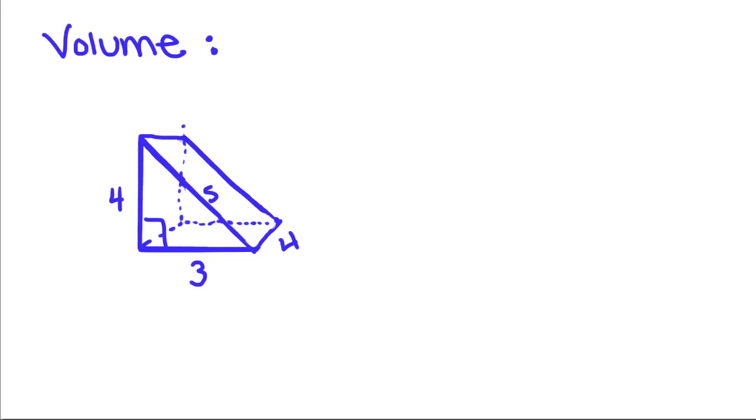We're going to do one more practice with volume. So for this one, our base is this right triangle right here. So we're going to do V equals the area of the base, which for right triangle is 1/2 base, which is 3 times our perpendicular height, which is 4 times the height of this prism, which would be, okay, and we're going to multiply that by our height.